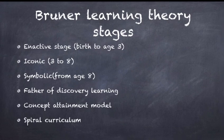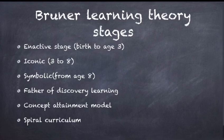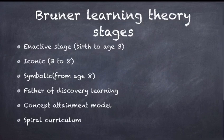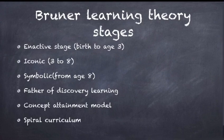Regarding Bruner's learning theory stages: the first stage is the enactive stage, from birth to age three. The second is the iconic stage, from three to eight. The symbolic stage is from age eight onwards. Bruner is the father of discovery learning, introduced the concept attainment model, and is associated with the spiral curriculum.